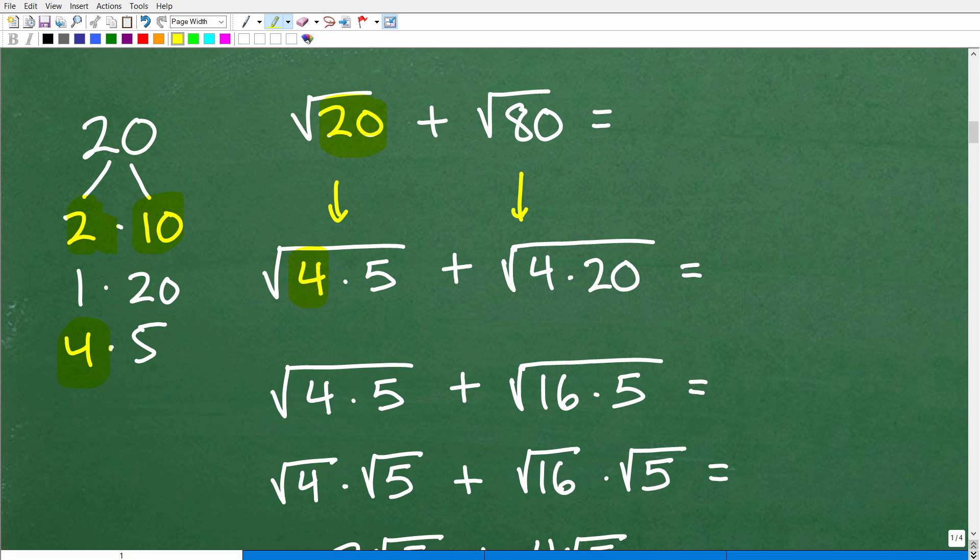So 20 is going to be equal to 4 times 5. And I'm going to write specifically 20 as the product of 4 times 5 because this 4 is a perfect square. Let's talk about 80 here. I'll come back to this in a second. So 80, you're like, oh, okay, 80 is the same thing as 4 times 20 because 4 is a perfect square.